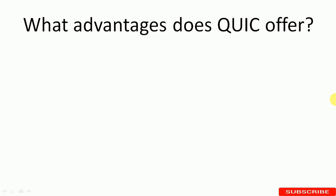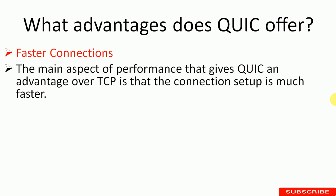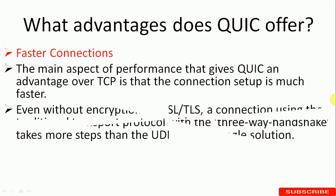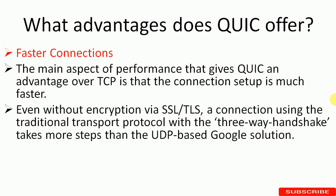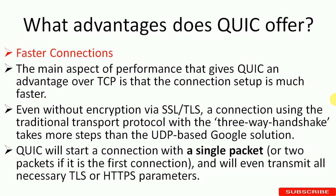Now let's discuss the QUIC advantages. The first advantage is fast connection. The main aspect of performance that gives QUIC an advantage over TCP is that the connection setup is much faster. Even without SSL/TLS encryption, a connection using the traditional transport protocol with the three-way handshake takes more steps than the UDP-based QUIC solution. QUIC will start a connection with a single packet, or two packets if it is a first connection, and will even transmit all necessary TLS or HTTP packets.